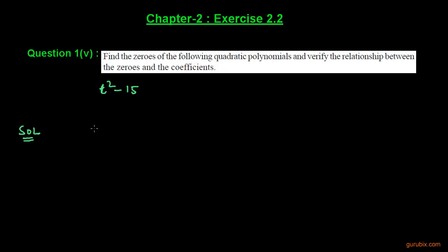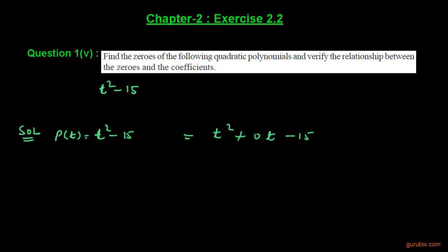First of all we shall collect the given polynomial, which is T squared minus 15, and we shall denote it by P(T) because the variable is T. The standard form of this polynomial is T squared plus zero T minus 15.